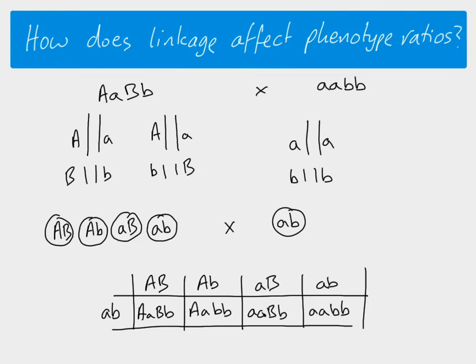In this example, colors represent what the different genes code for. Gene A codes for red color: the capital dominant allele gives a darker red, and the recessive allele gives a lighter pinky red. Gene B codes for green: capital B gives the dominant darker green, and homozygous recessive gives a lighter color. We can see we get four different genotypes and four different phenotypes when our two genes are not linked.